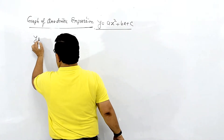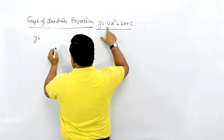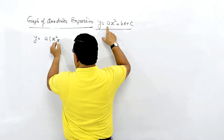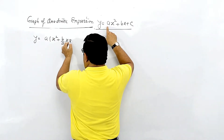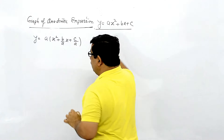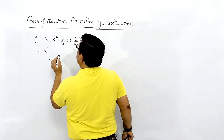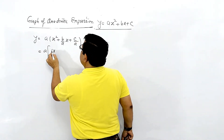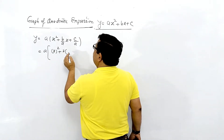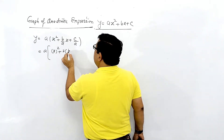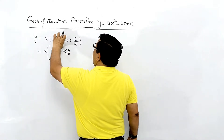For the vertex, we start with x² + (b/a)x + (c/a), which becomes x² + 2 times (b/2a) — this is the beginning of completing the square to find the vertex form.